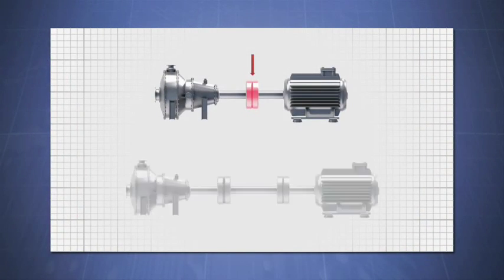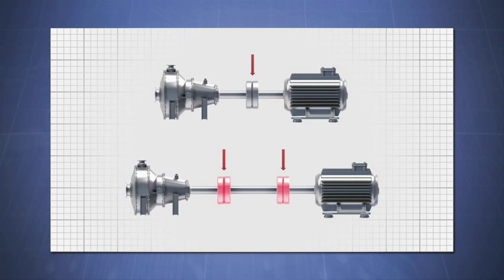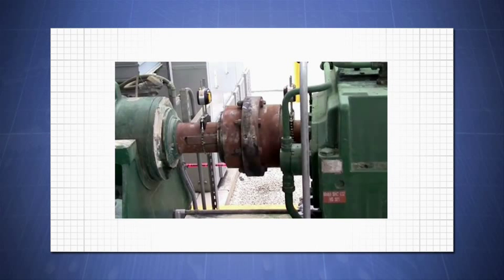Machines are aligned at the coupling point because this is the point of rotational energy transmission. Most machines are coupled by a short flex coupling. A short flex coupling has two flex planes where misalignment occurs.